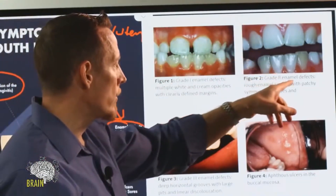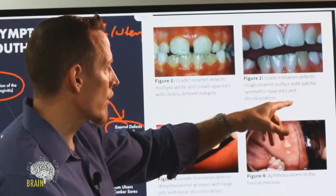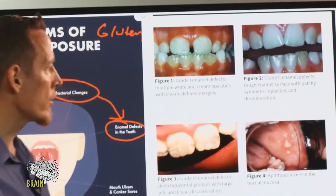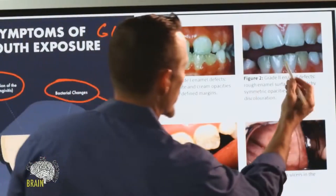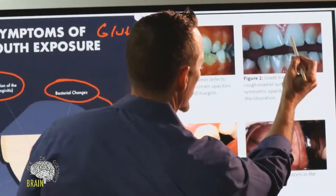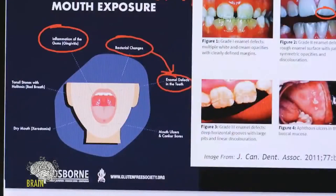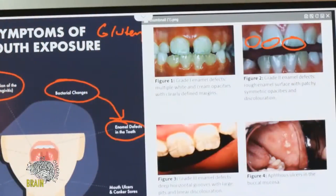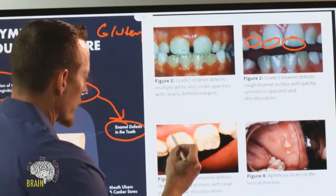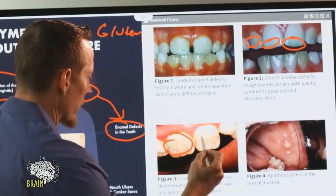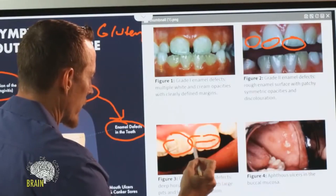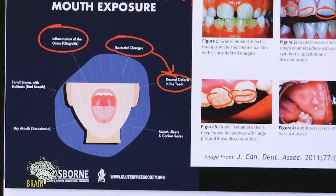Grade two enamel defects show rough enamel with patchy symmetric opacities and discoloration. If you zoom in you can see some of the patchiness in the wider areas of the teeth. Grade three is quite severe — you can really start to see it, with linear components running across the center of the tooth.